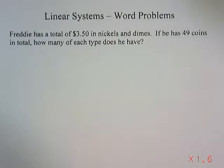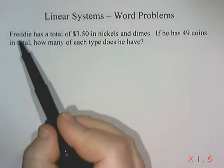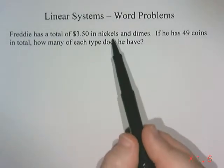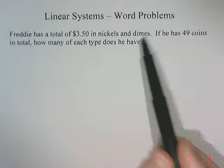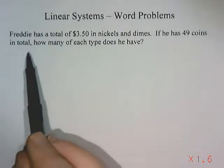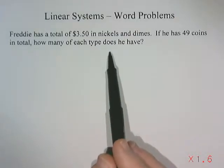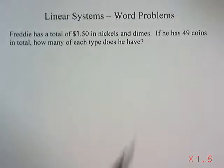Linear systems word problems. Our question says Freddy has a total of three dollars and fifty cents in nickels and dimes. If he has 49 coins in total, how many of each type does he have?